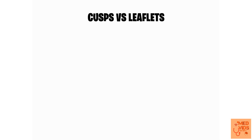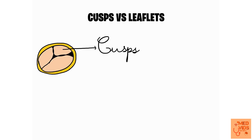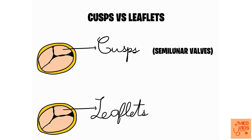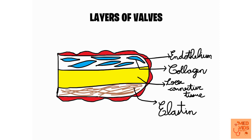I used the terms 'cusps' and 'leaflets' when describing different valves. They are basically the same thing but get different names depending on location: they are called cusps in semilunar valves and leaflets in atrioventricular valves.